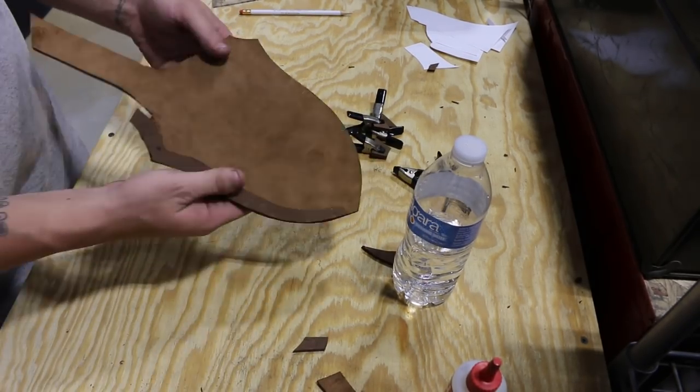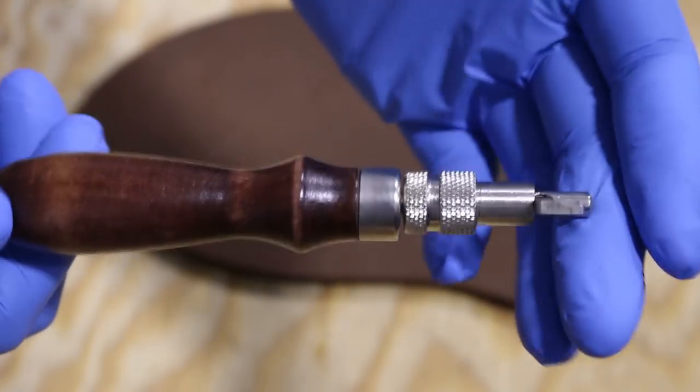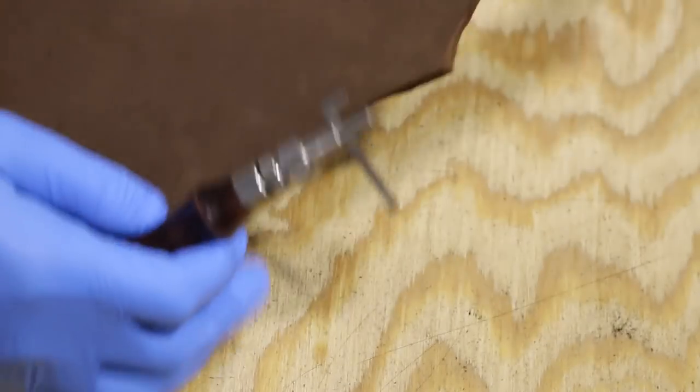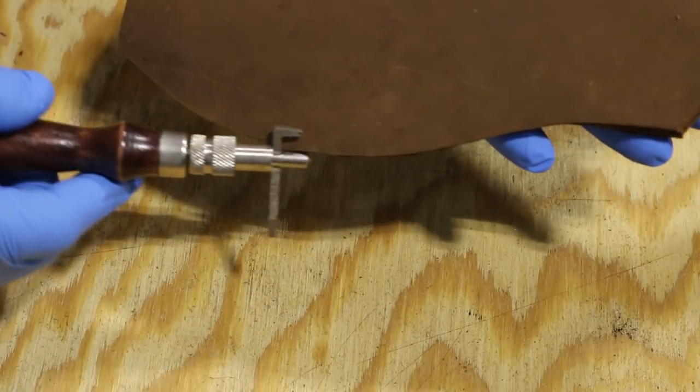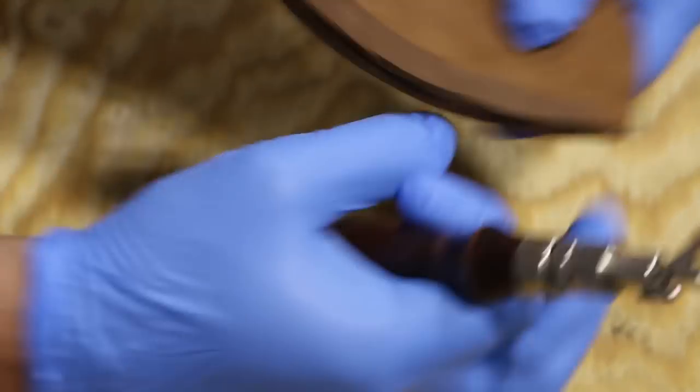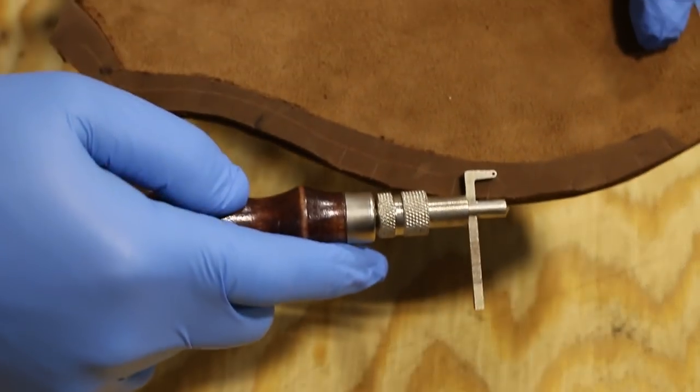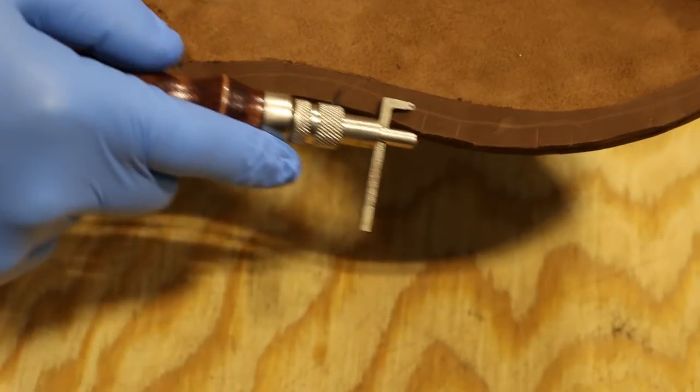Once it's dry, I'm ready to plan out where the stitching will go. I do this by using a stitching groover. This is a tool that cuts channels that can be used as guides while stitching and also helps the stitching to sit flush with the top of the leather. Before using the groover, I make sure that it's set to cut within the welt. Otherwise, the welt is basically useless.